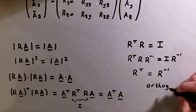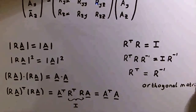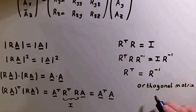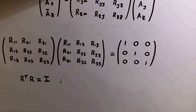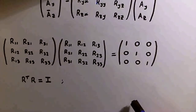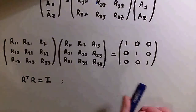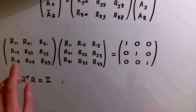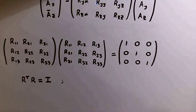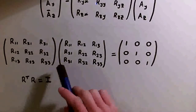This is the constraint on the three-dimensional rotation matrix R: it must be an orthogonal matrix, which is the case when the transpose of the matrix equals its inverse. We've established that the rotation matrix R must be orthogonal to preserve the length of vectors A, and it must satisfy R^T times R equals the identity matrix. The rows and columns are switched between the two matrices, and their product is the three-dimensional identity matrix.